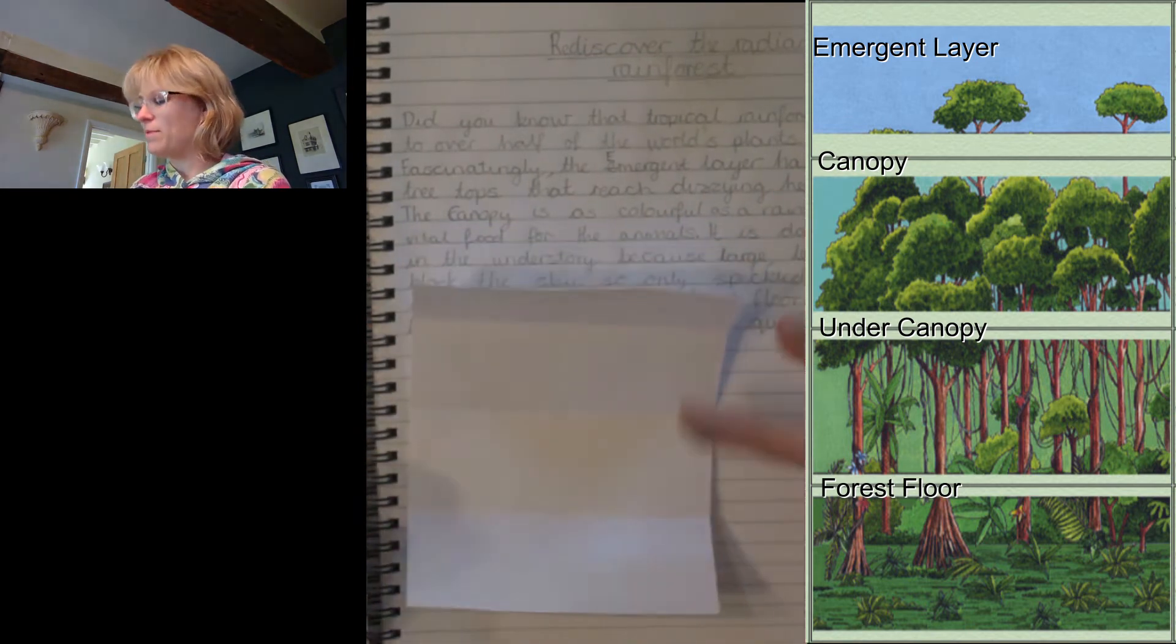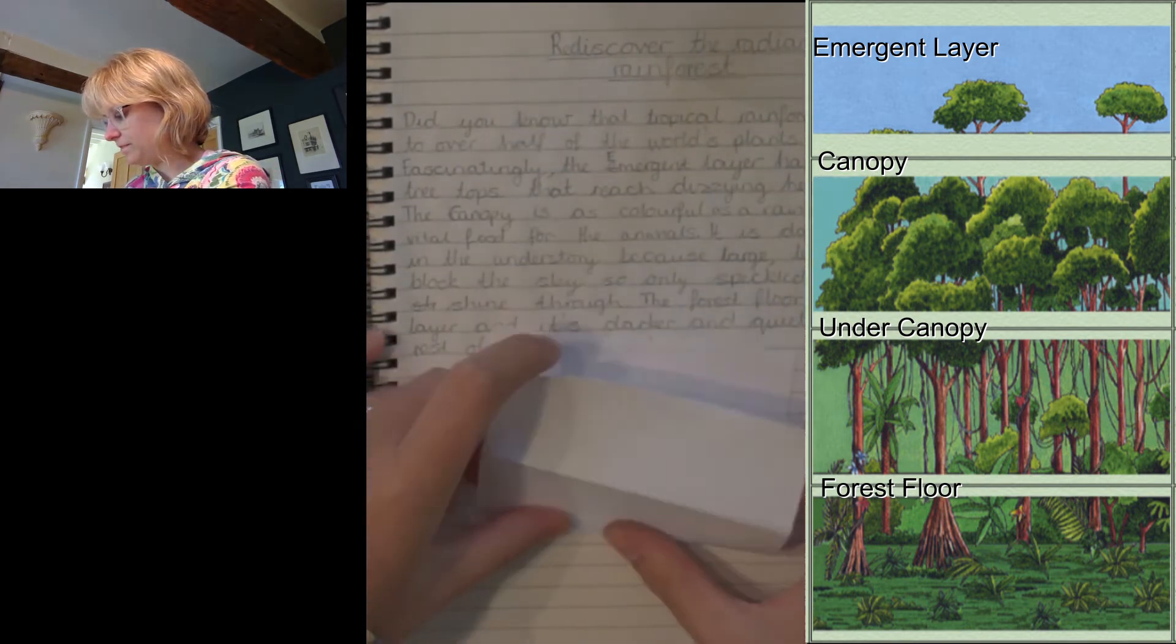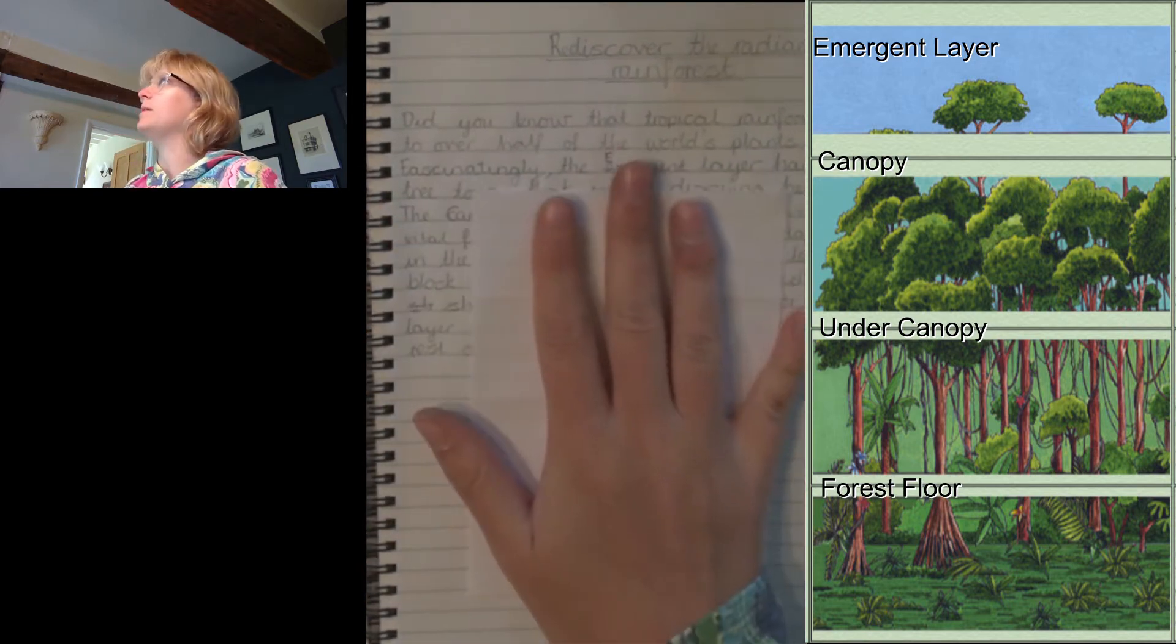Now if your paper's doing that like mine is, turn it over and just fold it again along the same lines, and then it should lie reasonably flat.